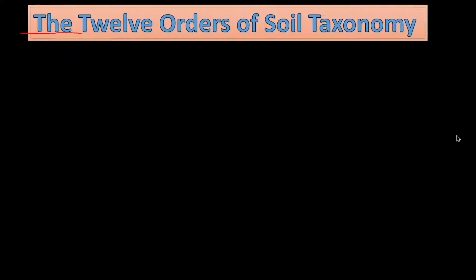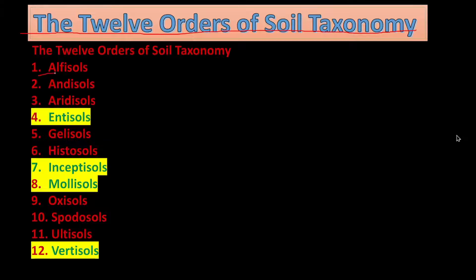The 12 orders of soil taxonomy: 1. Alfisols, 2. Andisols, 3. Aridisols, 4. Entisols, 5. Gelisols, 6. Histosols, 7. Inceptisols, 8. Mollisols, 9. Oxisols, 10. Spodosols, 11. Ultisols, 12. Vertisols.